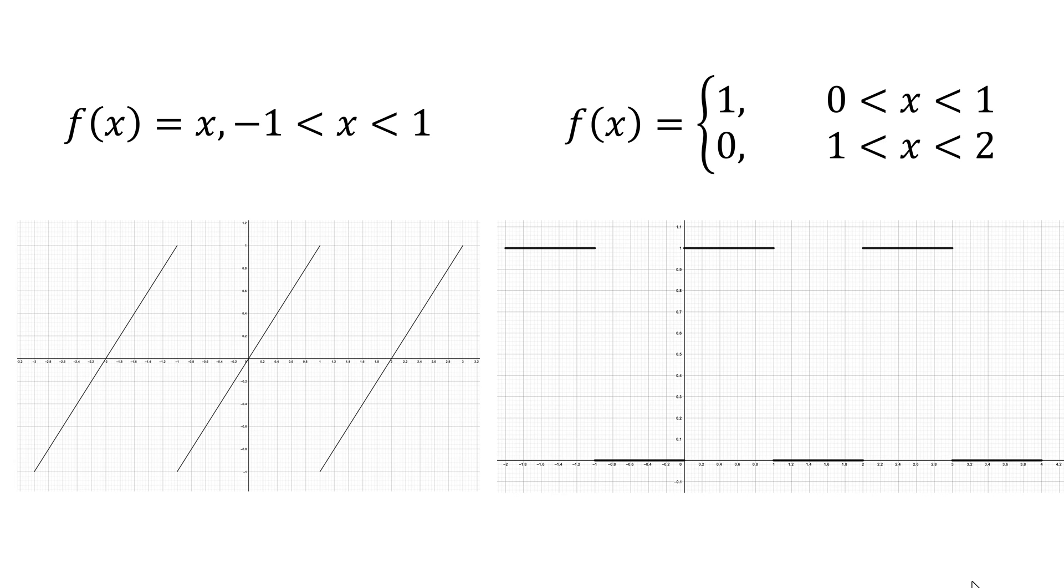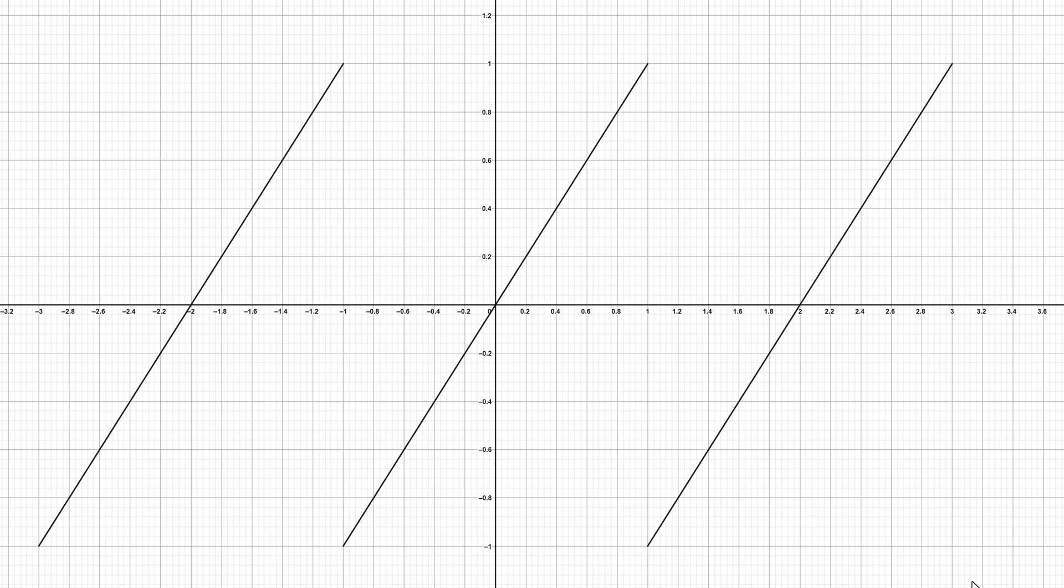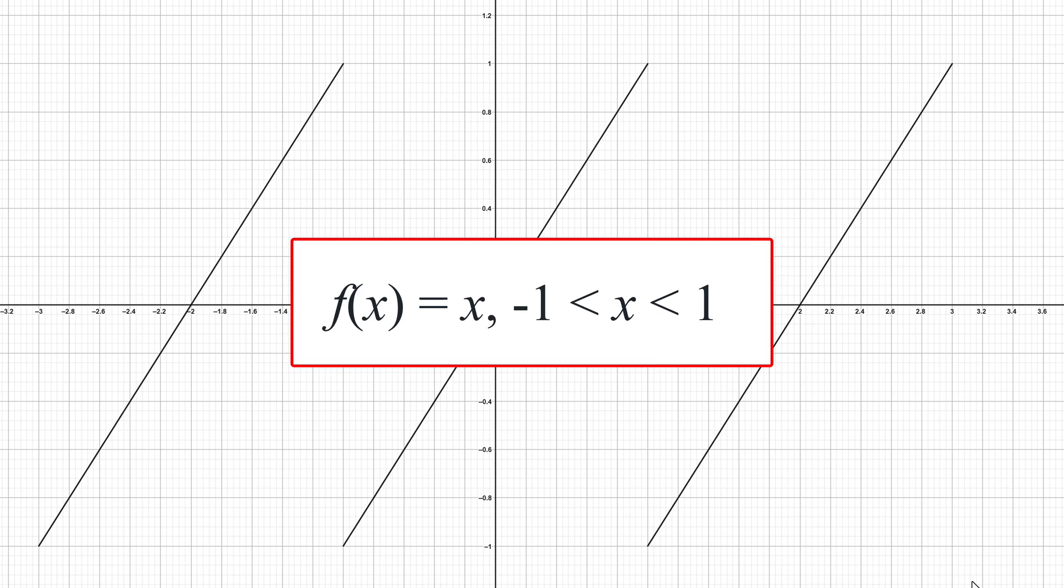We will plot the sawtooth wave and the square wave functions as examples. The first example is a sawtooth wave function. This function is important to describe a switch mode power supply and music signal processing. Given function f(x) equal to x minus 1 where x is between -1 to 1, then it repeats the function value at the period of 2.